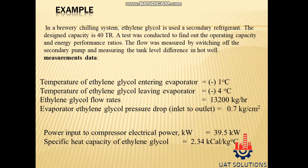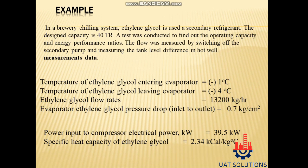Let's practice what we learned via an example. In a brewery chilling system, ethylene glycol is used as a secondary refrigerant. The design capacity is 40 TR. A test was conducted to find out the operating capacity and energy performance ratios. The flow was measured by switching off the secondary pump and measuring the tank level difference in the hot well. Measurements: temperature of ethylene glycol entering evaporator = −1°C; leaving evaporator = −4°C; ethylene glycol flow rate = 13,200 kg per hour; evaporator pressure drop (inlet to outlet) = 0.7 kg/cm²; power input to compressor = 39.5 kW; specific heat capacity of ethylene glycol = 2.34 kcal/kg°C.